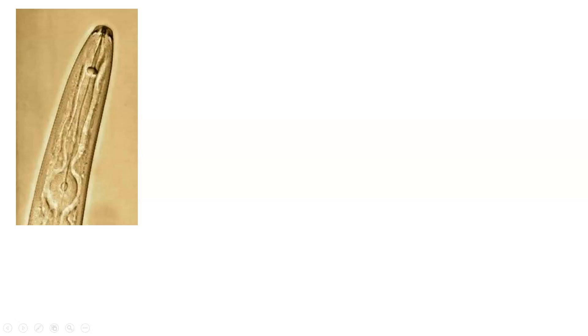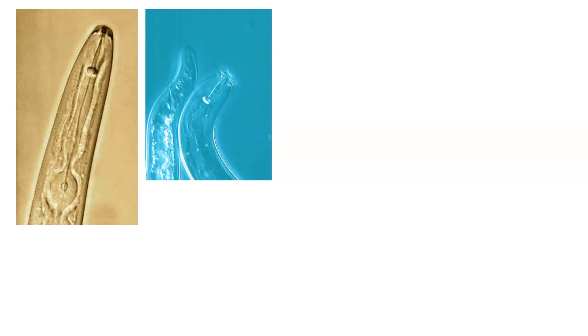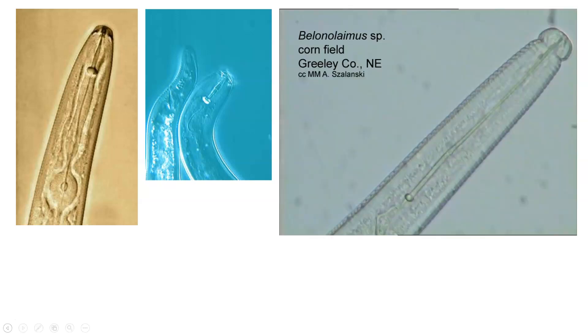This nematode has a short stylet that looks much like a dagger. These can easily penetrate into the root system of plants and as they do they create quite a wound. This nematode belongs to the genus Bolaunolimus.